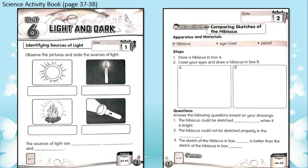Now it's time for our exercises. Take out your science activity book and turn to page 37. You will find the page on light and dark. The first activity — as usual, write down the date. Read the instruction: observe the pictures and state the source of light. Remember, we have three sources of light — the sun, lamps, and fire.